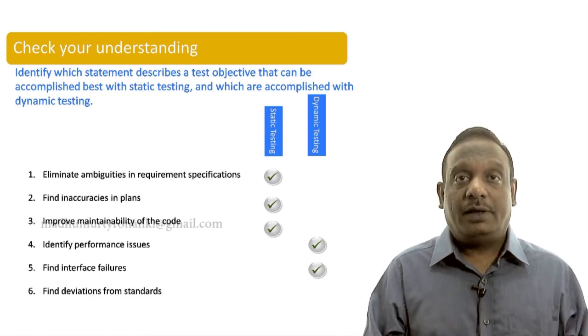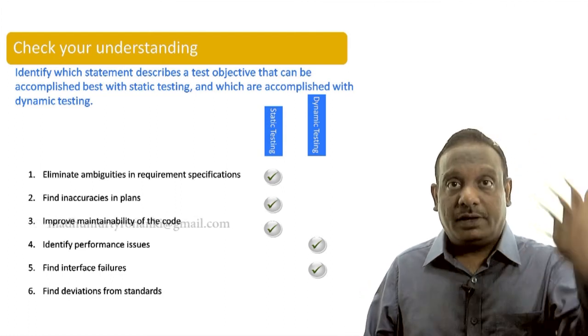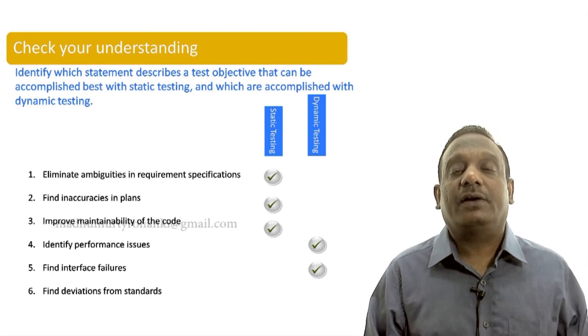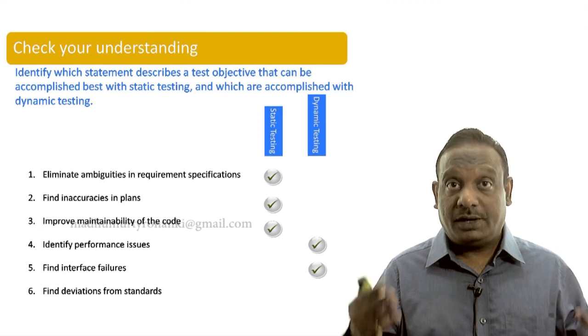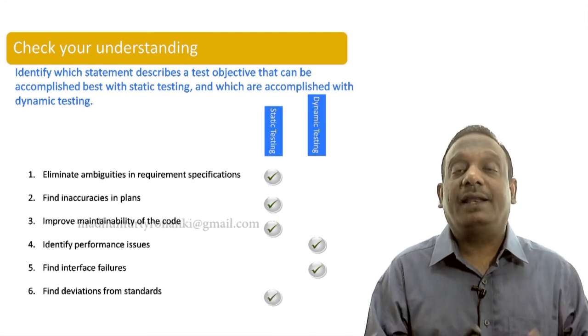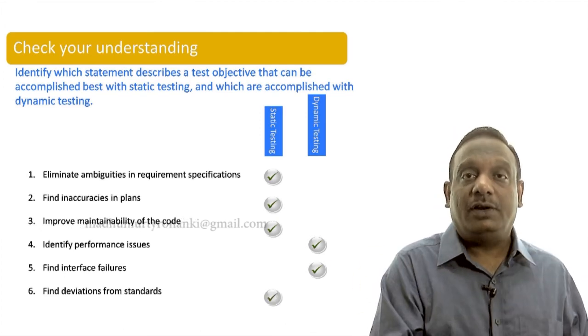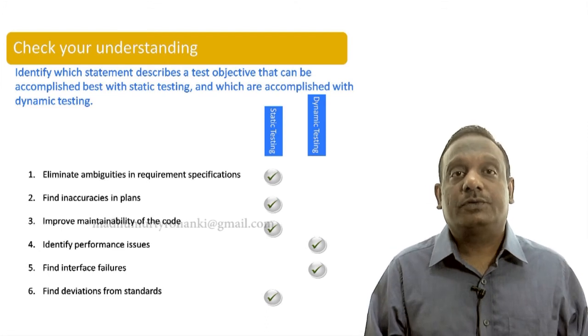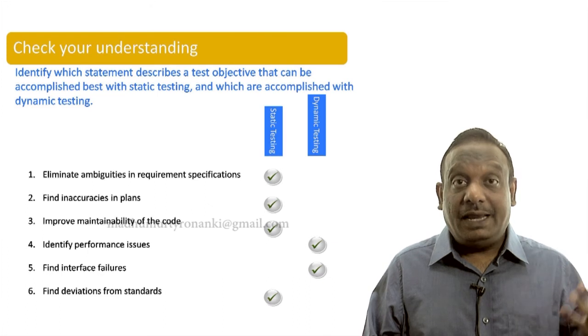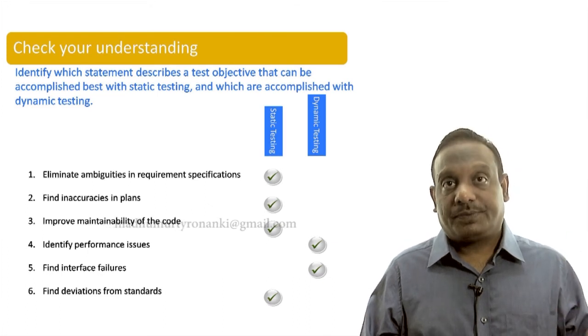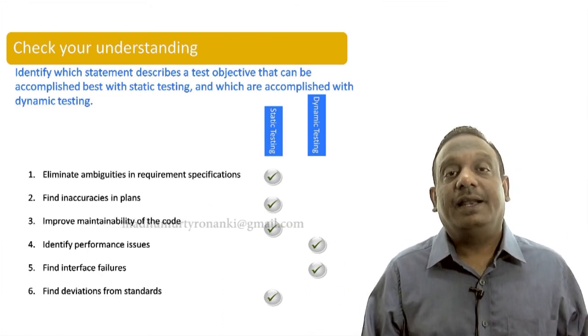The sixth one is find deviations from standards. Whether the programmers have followed the company standards or not. Can they be found by executing code? No. You can find them only by analyzing the code either manually or by using tools. That is how we differentiate the type of problems that can be found between static and dynamic testing.